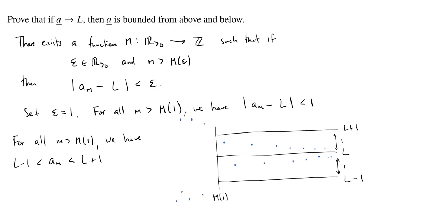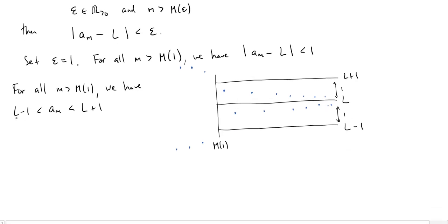So we haven't quite found a bound yet. However, it would make sense, right? So we can say, thus, the sequence A is maybe not bounded by L plus 1 and L minus 1, but eventually bounded by L plus 1 from above and L minus 1 from below.